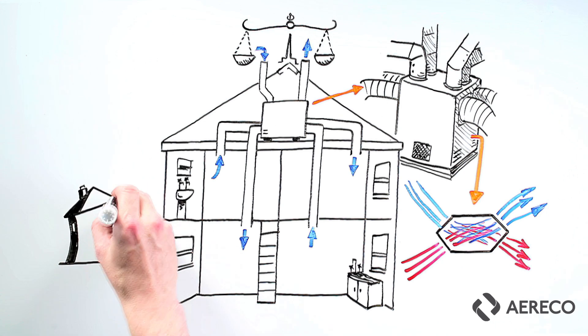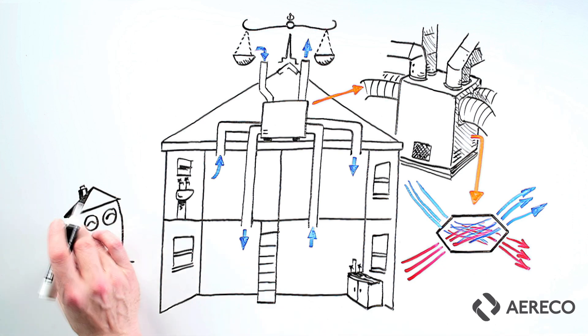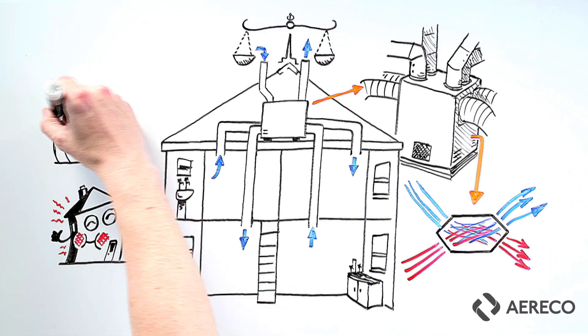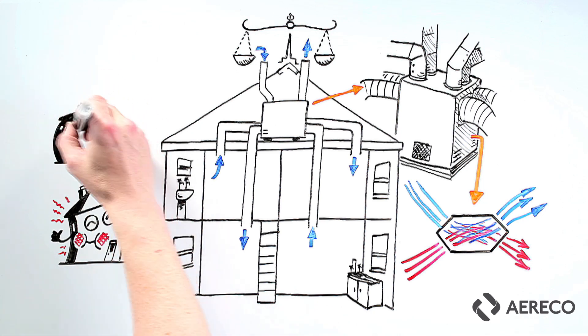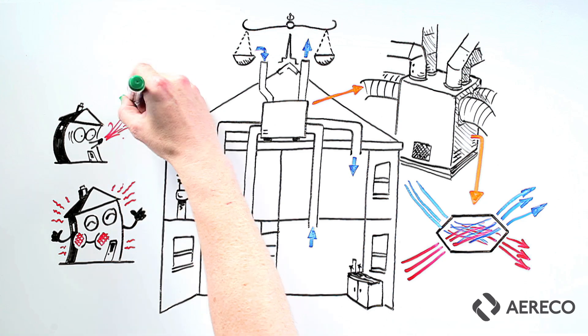As such, MVHR is often used in energy-efficient buildings to assist in the retention of heat. Did you know, an MVHR system needs to be in an airtight house to really get the benefit of recovering heat.